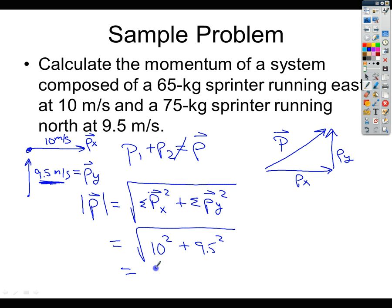And so you should end up with about 964, and then this could either be kilogram meter per second or a newton times a second. In order to find the direction, the thing that we need to do is we've got to find this angle.